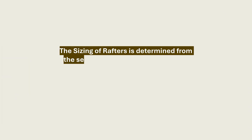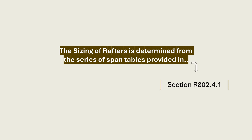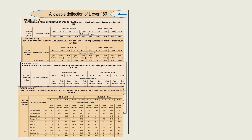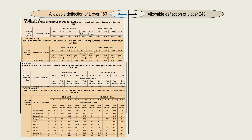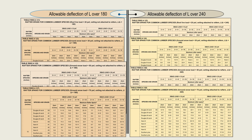The sizing of rafters is determined from the series of span tables provided in section R802.4.1. This series consists of eight span tables divided into two broad groups. One group of four tables provides for the selection of rafters with an allowable deflection of L over 180, and the second group has an allowable deflection of L over 240. For each deflection group, the code provides four tables: the first table is based on 20 pounds per square foot live load, the second on 30 pounds per square foot ground snow load, the fourth on 50 pounds per square foot ground snow load, and the last on 70 pounds per square foot ground snow load.